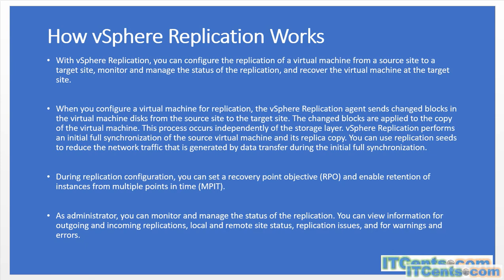vSphere Replication uses networking between your source site and target site — that is, production and DR site. It could be a dedicated network or the same network used by virtual machine workloads, and you can even encrypt it. Make sure you have enough bandwidth when performing the full initial synchronization. As an administrator, you can monitor and manage the replication status, view information about incoming and outgoing replication, local and remote site status, and replication issues including warnings and errors.